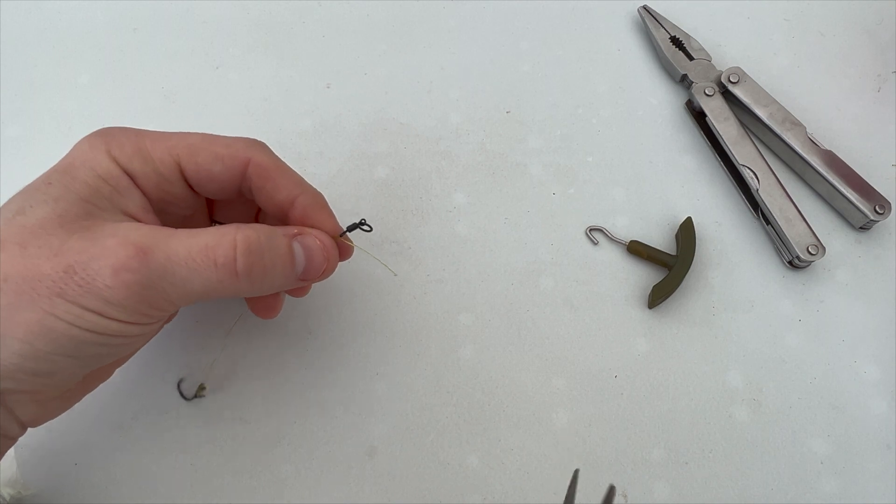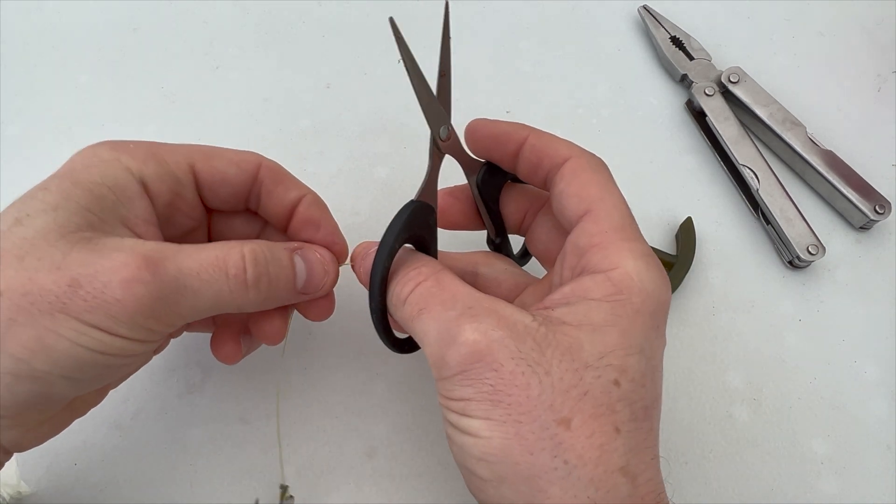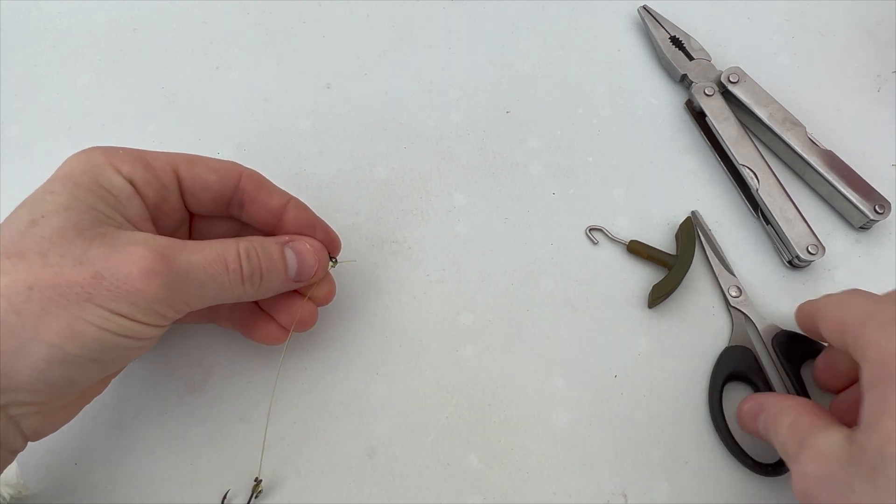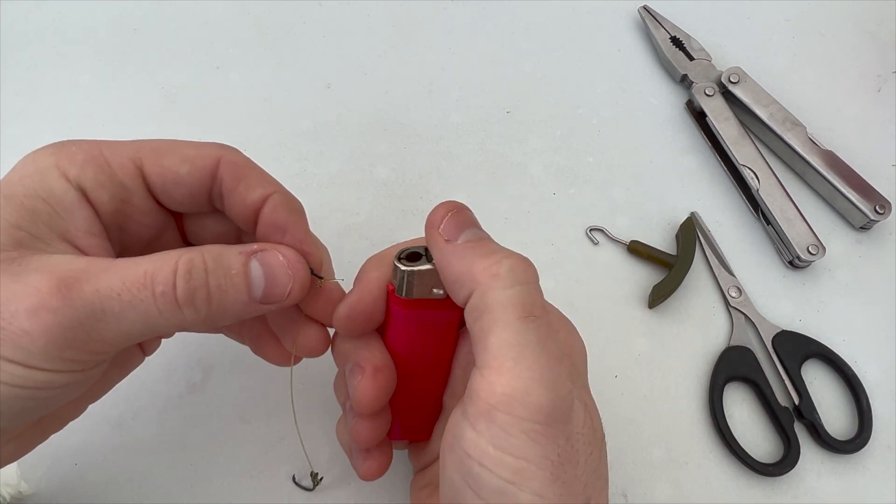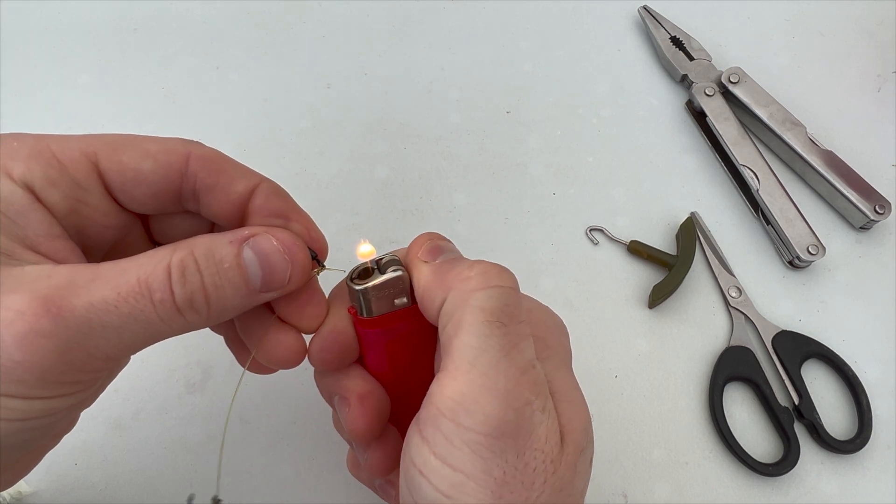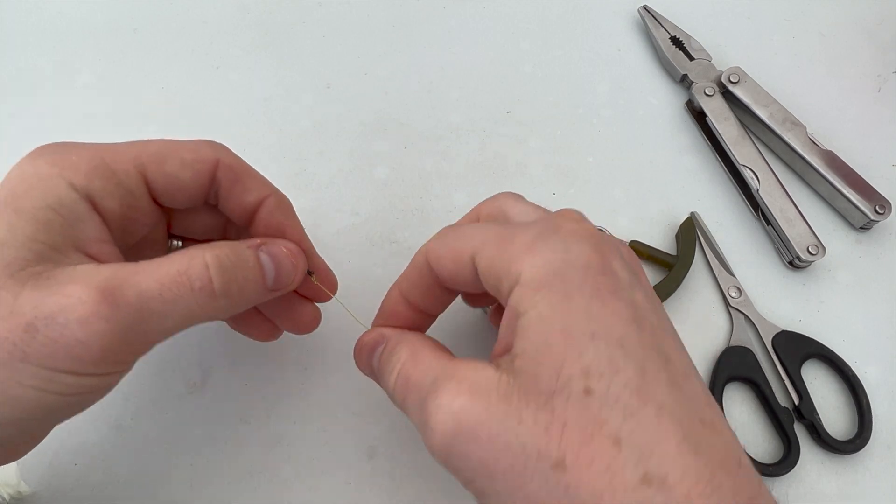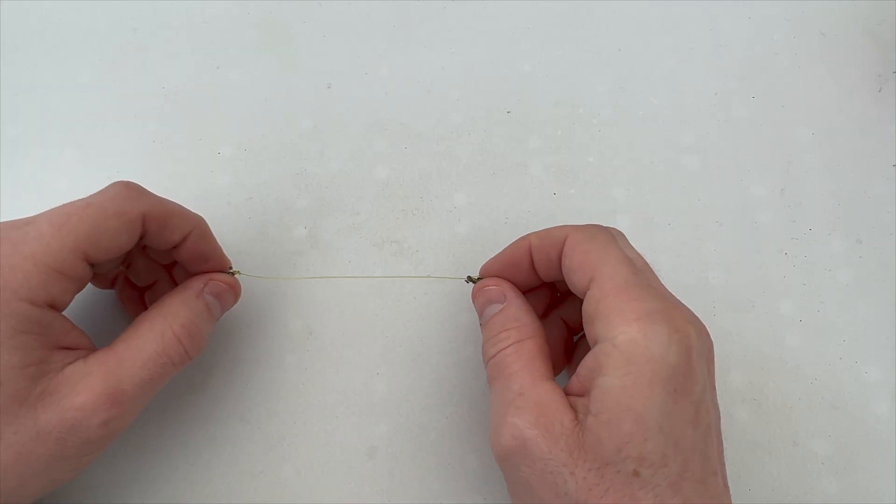Now we just want to trim down the end, only about another centimeter. Take a lighter again, blob the end. There we go, nothing too much. Chod rig complete.